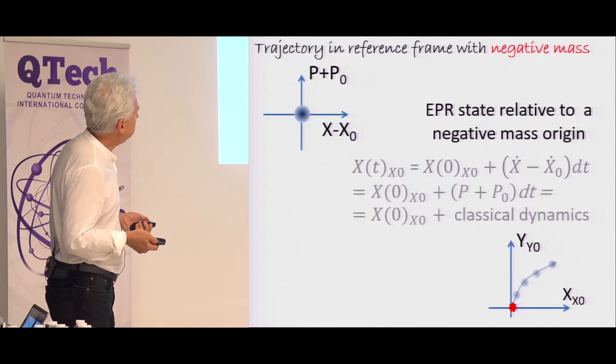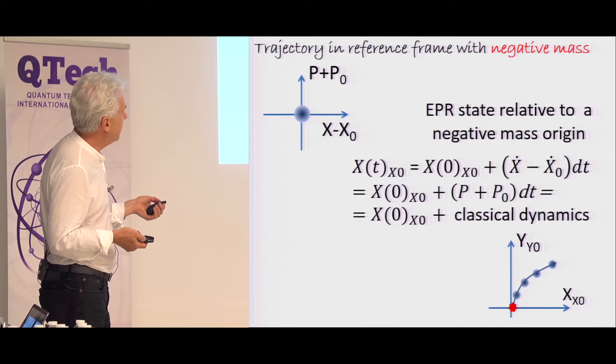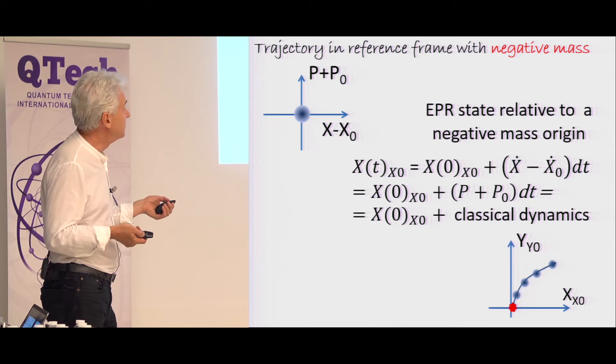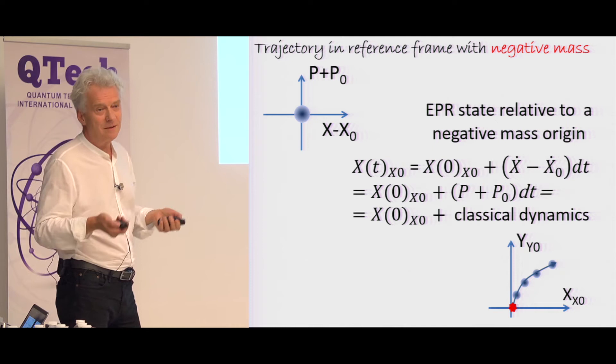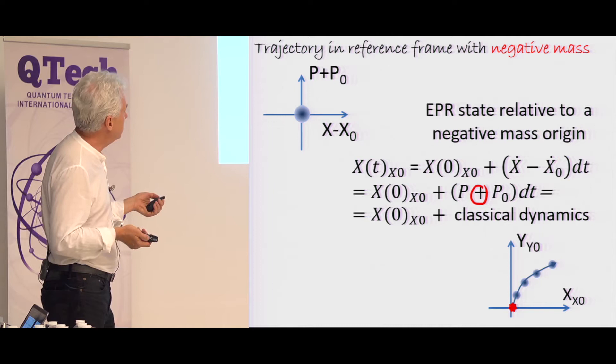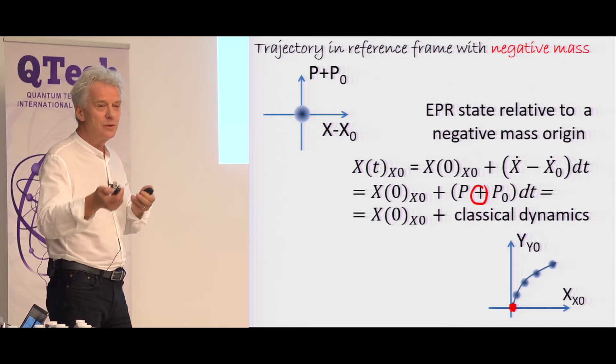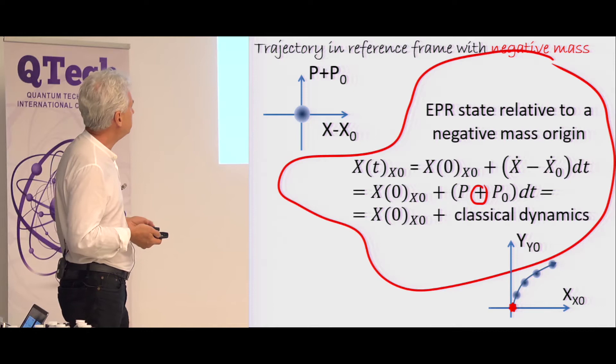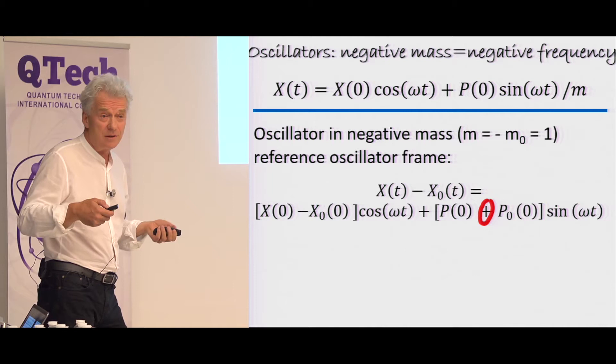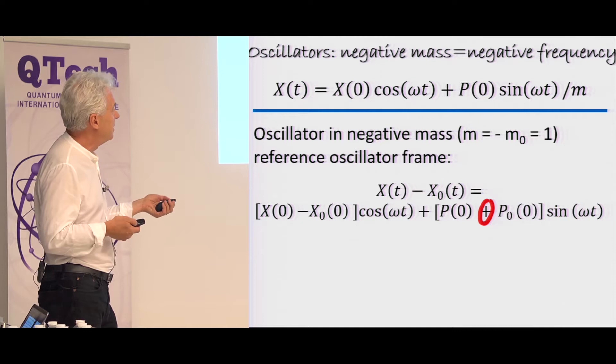But now, if I can change this minus sign to the plus sign here, which means that the derivative of the position operator of my reference system is minus its momentum, then everything is fine. And how should it be? Well, you introduce an effective negative mass. And for an effective negative mass, this derivative has a minus sign here. And now you have commuting variables defining your trajectory. And then you can keep measuring and you will see arbitrarily small disturbances in both x and p. The same story goes for an oscillator. And for an oscillator, you can also think about it not as a negative mass but a negative frequency.